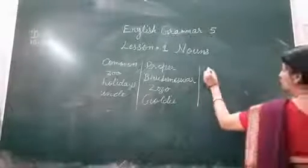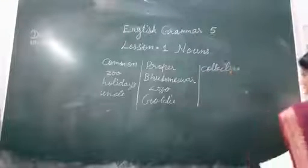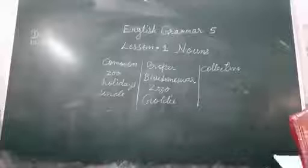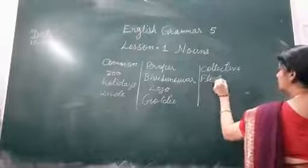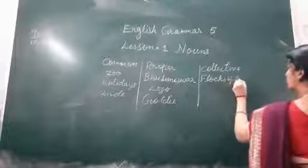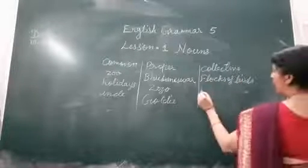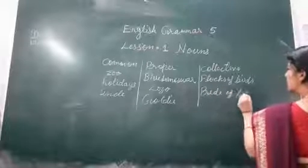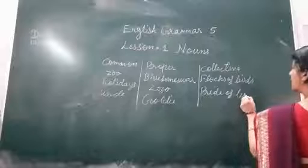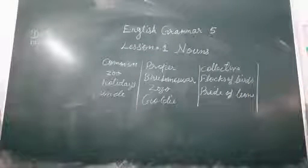Then collective. From the passage I searched flocks of birds, pride of lions. These are the collective nouns: group of birds and group of lions.